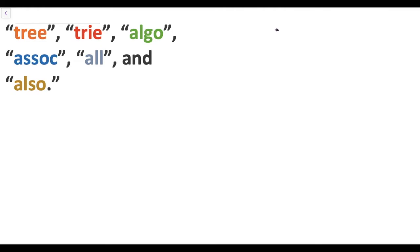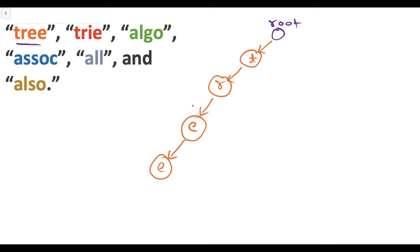Let's make a trie for some words. A trie has a root which does not contain any character, so let's make a root first. Now let's take the first word, tree. The first character is t — since root doesn't have a child t, let's make a child t. The second character is r, so let's make a child r. The third and fourth characters are both e. Now for the second word, trie: the first character t already exists, so we move to t. The second character r also exists, so we move to r. The third character is i, so let's make a child i, and the fourth character is e, so let's make a child e.